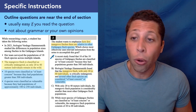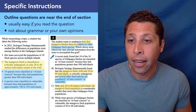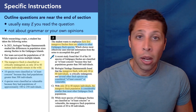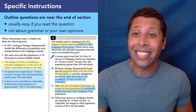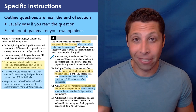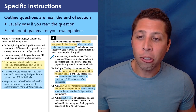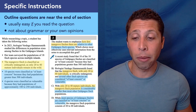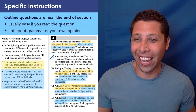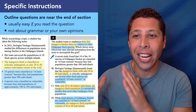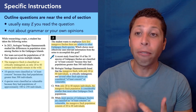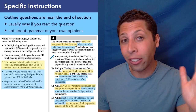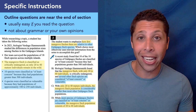Choice C: With only 20 to 40 mature individuals, the mangrove finch population is considerably smaller than most other Galapagos finch populations. So we have a comparison there too. Choice D flips things: while most species of Galapagos finches are classified as of least concern or vulnerable, the mangrove finch population consists of 20 to 40 individuals. The order doesn't matter — it still accomplishes both goals. So B, C, and D all seem to hit on the comparison point. If I'm stuck between choices, I'm going to go back and reread the question, not the bullet points, because that's really where the work is done.